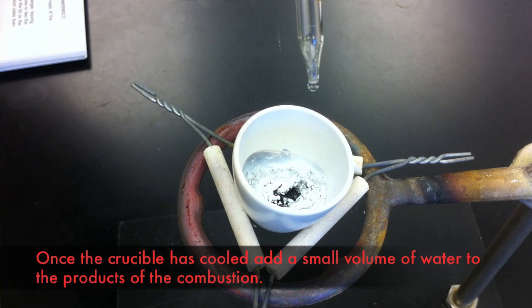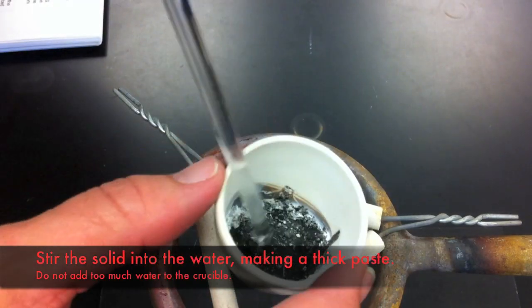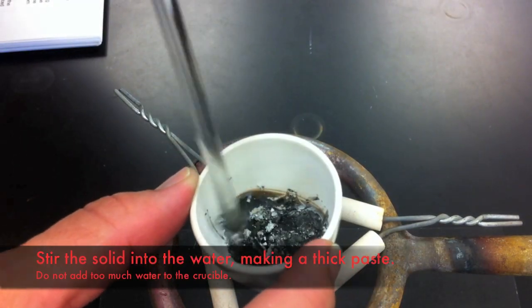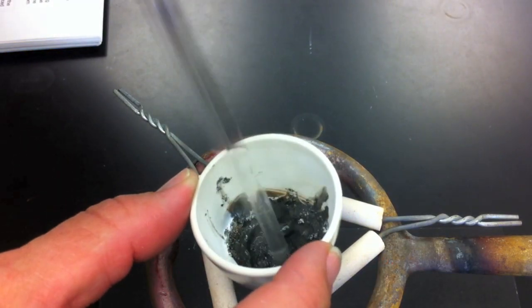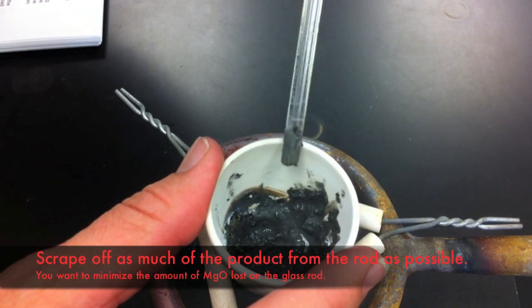Using a medicine dropper, add a small volume of water to turn the solid in the bottom of the crucible into a thick paste. You'll do this by stirring it up with a glass stirring rod. Ensure that all the material remains within the crucible, so wipe off the stirring rod on the edge of the crucible before you complete this step.